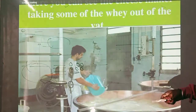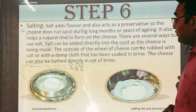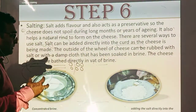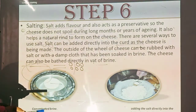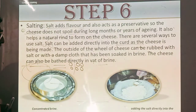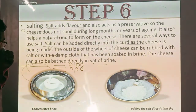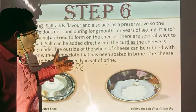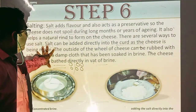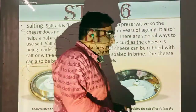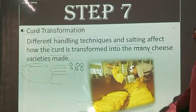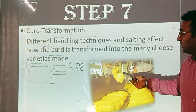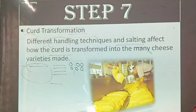The whey is drained out. Salt and flavors are then added as preservatives. There are several ways to use salt: salt can be added directly to the curd while the cheese is being made, rubbed on the outside of the wheel of cheese, or the cheese can be bathed directly in brine water. Salt acts as a preservative and enhances the flavor of the cheese. Salting occurs after the curd transformation and different handling techniques and salting effects determine how the curd is transformed into many types of cheese.